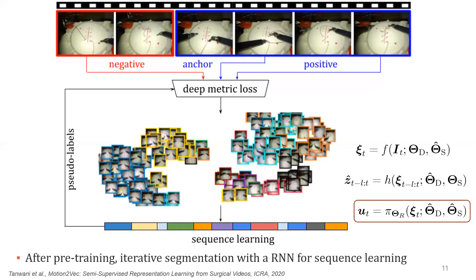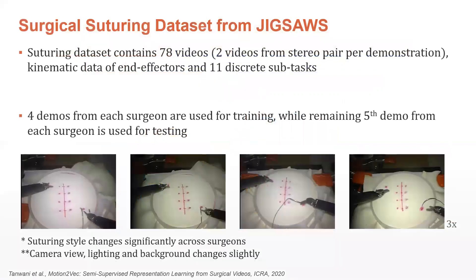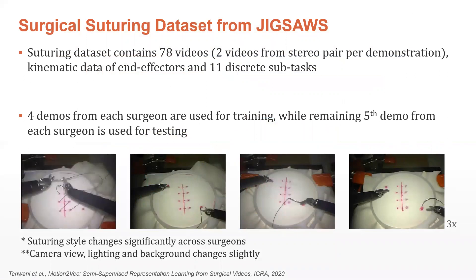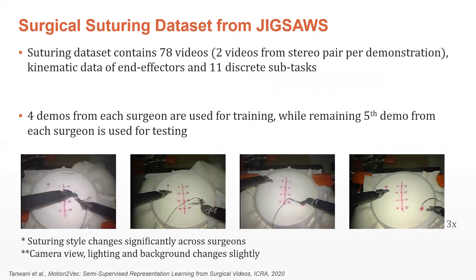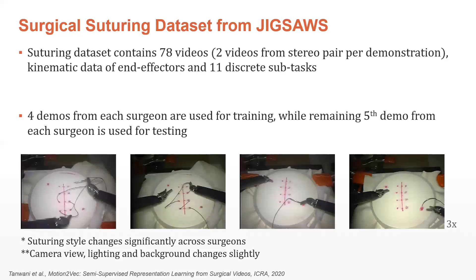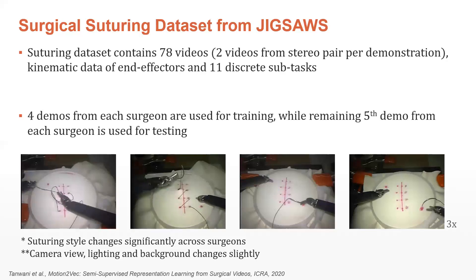The embedded observations are then used to learn the control policy for pose imitation. We use the suturing videos of the Jigsaws dataset for action segmentation and pose imitation on the DaVinci robot arms. The dataset consists of 78 videos obtained from eight surgeons performing the suturing task five times each. We use four demonstrations per surgeon for training, while the remaining fifth one is used in the test set. Note that the camera viewpoint, lighting, and background change slightly across demonstrations, while the suturing style and temporal duration of the task change significantly across surgeons.